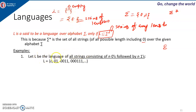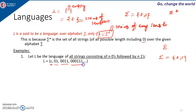For example, if L is the language of all strings consisting of n zeros followed by n ones, and sigma is {0, 1}, then the strings are: epsilon (zero 0s, zero 1s), 01 (one 0 followed by one 1), 0011 (two 0s followed by two 1s), 000111, 00001111, and so on.